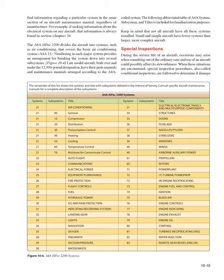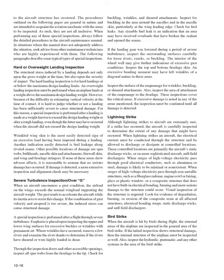Special inspections: During the service life of an aircraft, occasions may arise when something out of the ordinary could possibly affect its airworthiness. When these situations are encountered, special inspection procedures, also called conditional inspections, are followed to determine if damage to the aircraft structure has occurred. The procedures outlined are general in nature and are intended to acquaint the aviation mechanic with areas to be inspected. When performing any of these special inspections, always follow the detailed procedures in the aircraft maintenance manual.